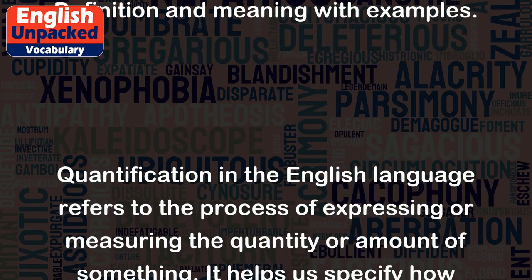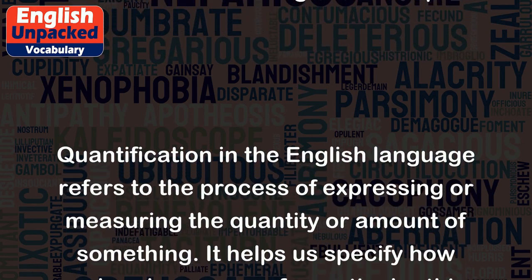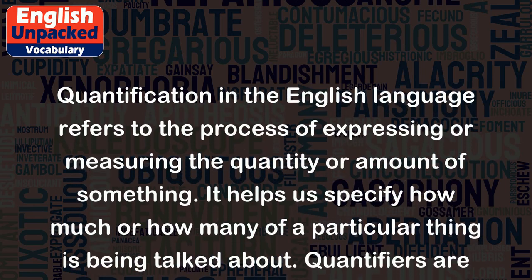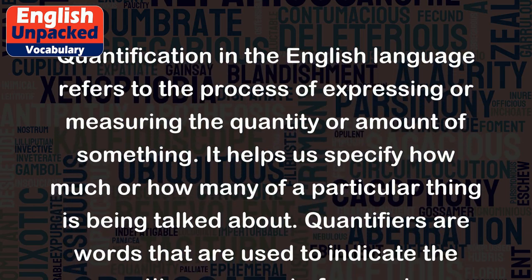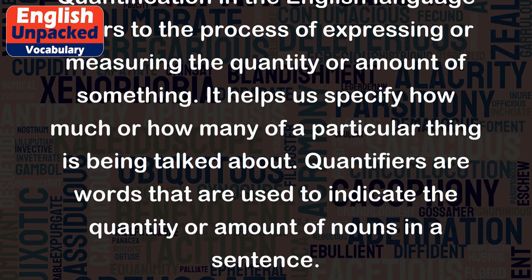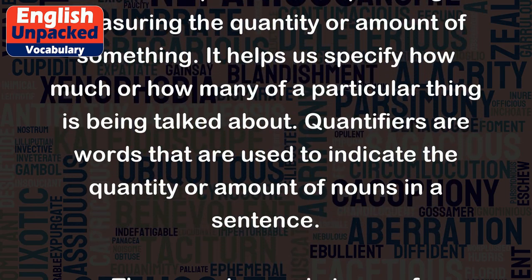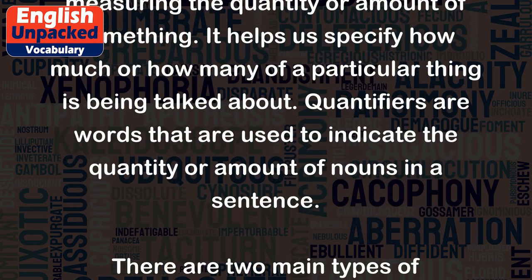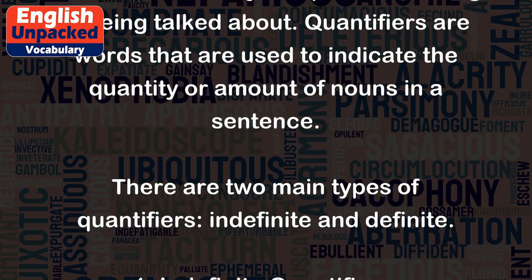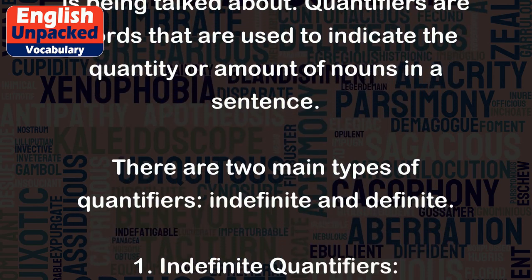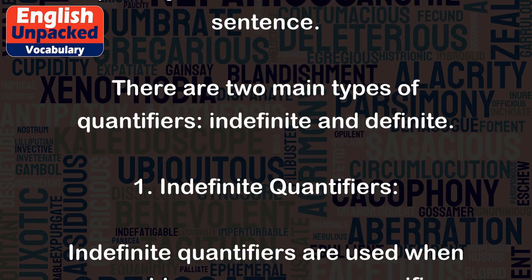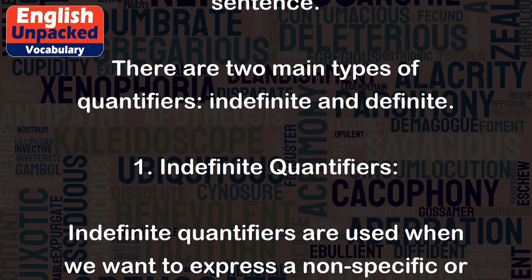Quantification in the English language refers to the process of expressing or measuring the quantity or amount of something. It helps us specify how much or how many of a particular thing is being talked about. Quantifiers are words that are used to indicate the quantity or amount of nouns in a sentence. There are two main types of quantifiers: indefinite and definite.